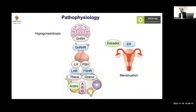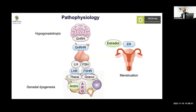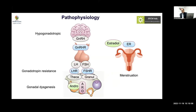Hypogonadotropic hypogonadism presents with classical delayed puberty — no development — but pubarche may still occur because adrenal production is intact. If there is multiple pituitary hormone deficiency, pubarche may also be absent. Ovarian abnormalities like gonadal dysgenesis — the classical example being Turner syndrome with short stature — include many XY DSDs. XY DSD is an act of omission: defective genes mean no testis development and thus normal female development, associated with tall stature.